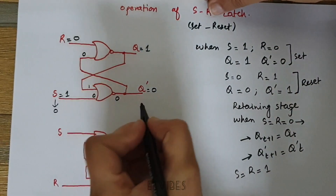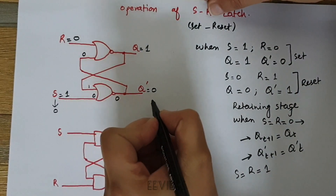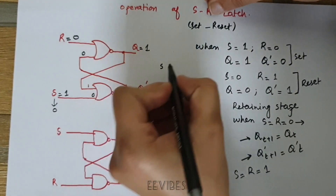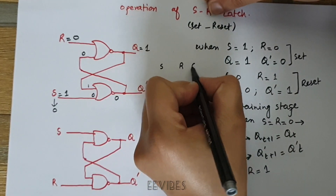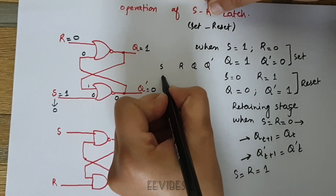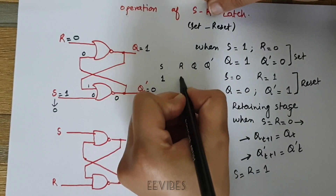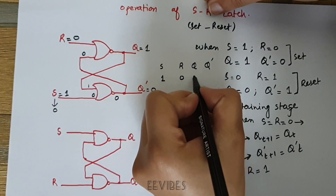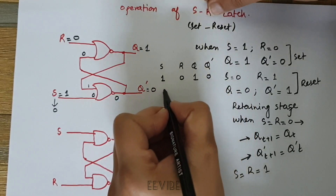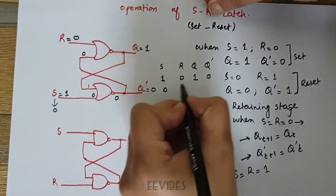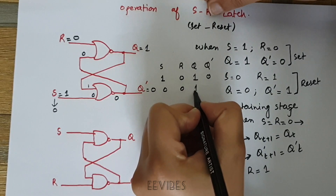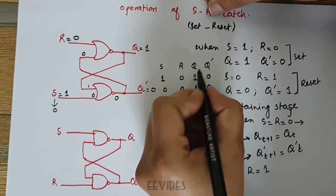If we draw the truth table for this, with columns S, R, Q, and Q-bar: when S equal to 1 and R equal to 0, output Q was equal to 1 and Q-bar equal to 0. When making both inputs 0, 0, the latch retains its previous state.